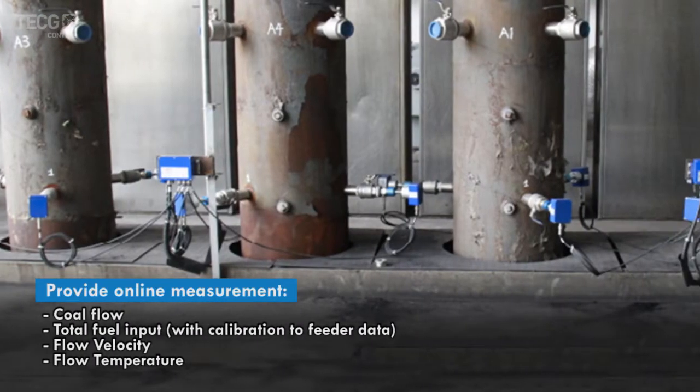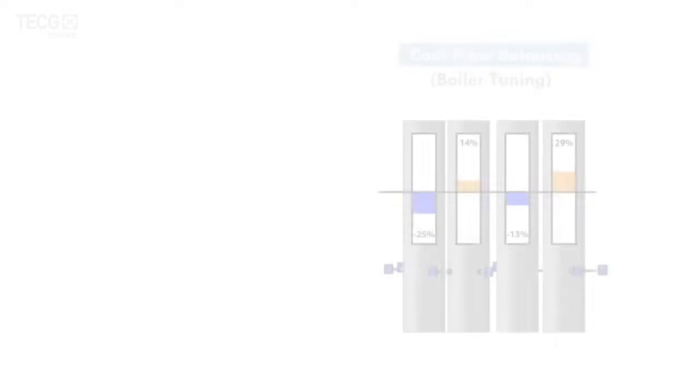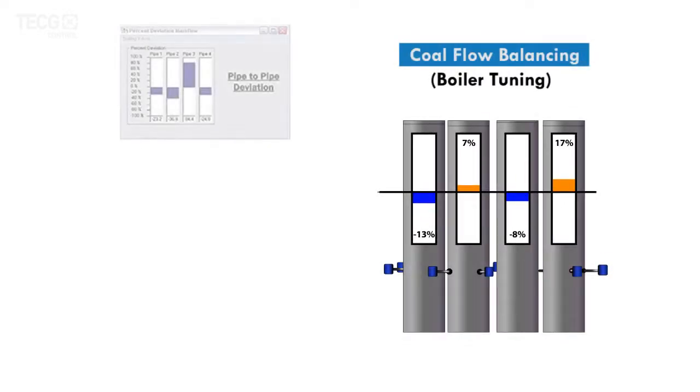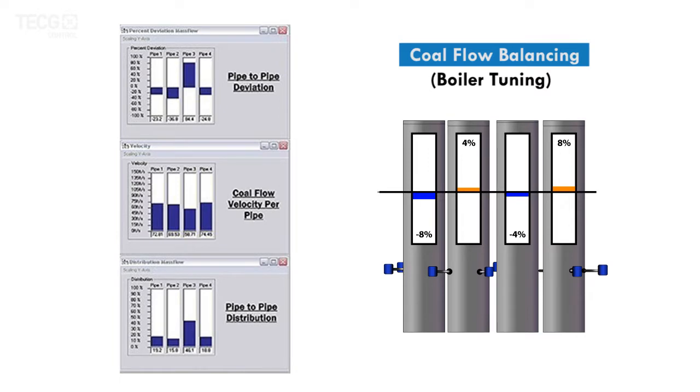This system can rapidly and accurately measure the coal flow up to eight pipes, including online coal flow measurement, coal flow velocity, and total fuel input.